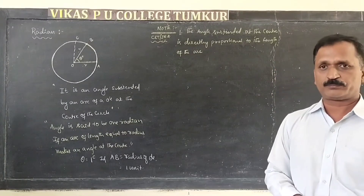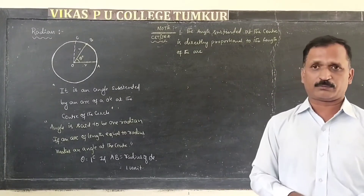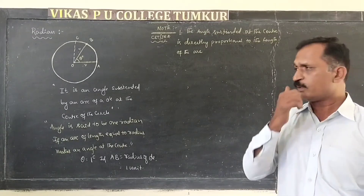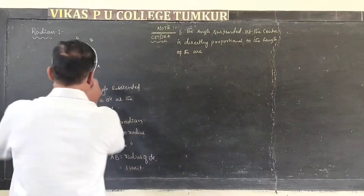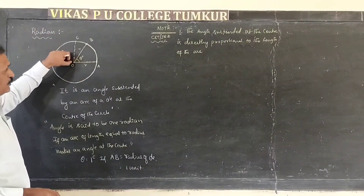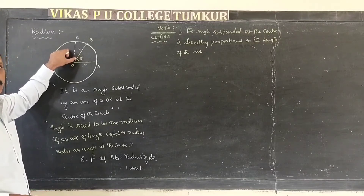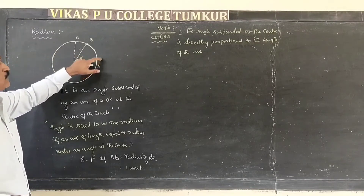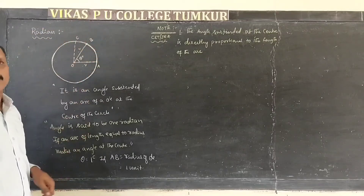Now here is one important idea. What is the total angle at the center? The total angle at the center of the circle will depend on the total circumference of the circle.